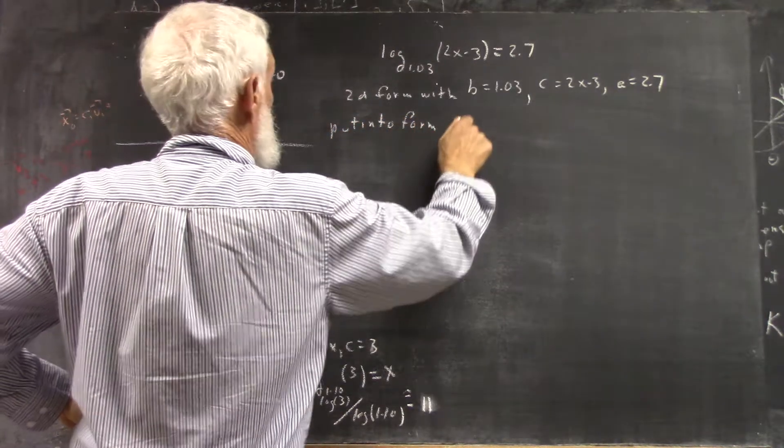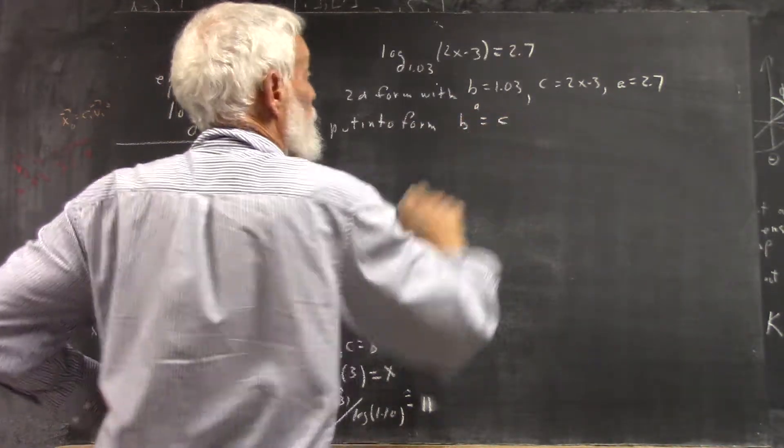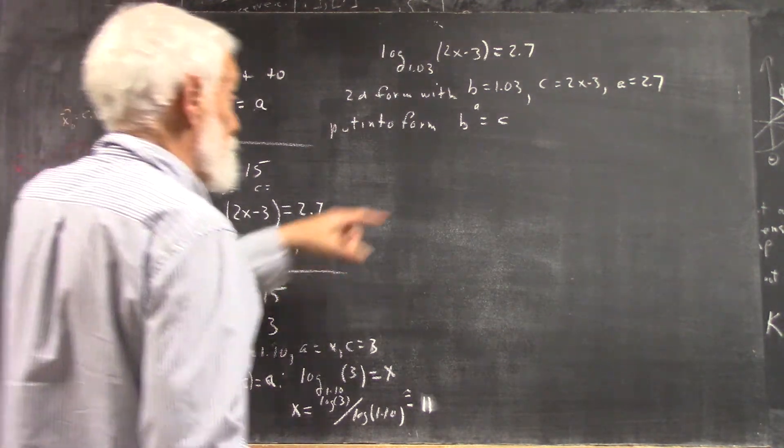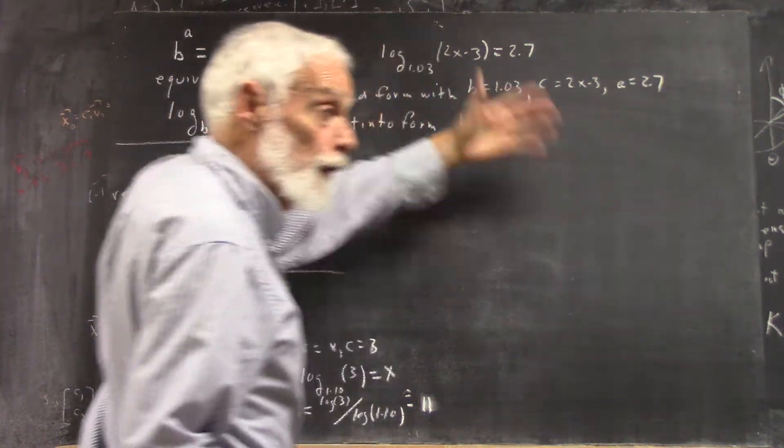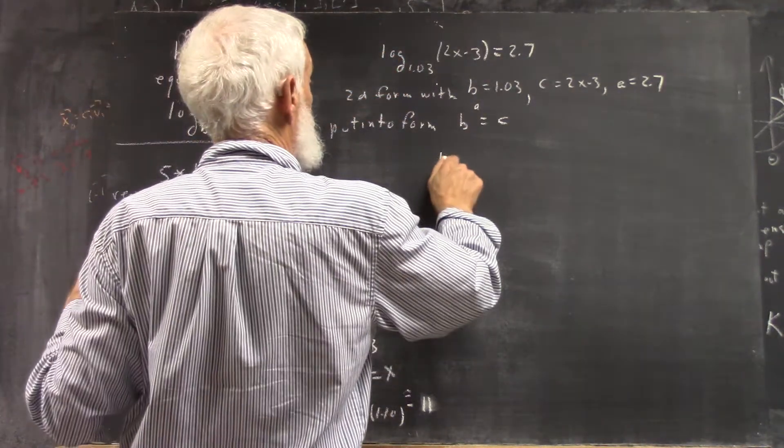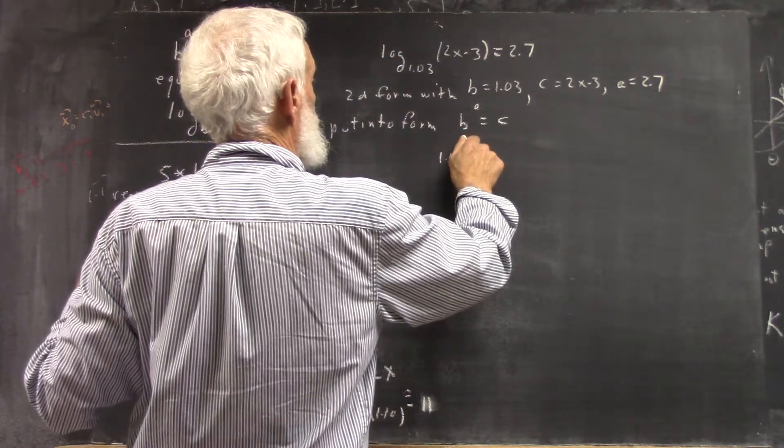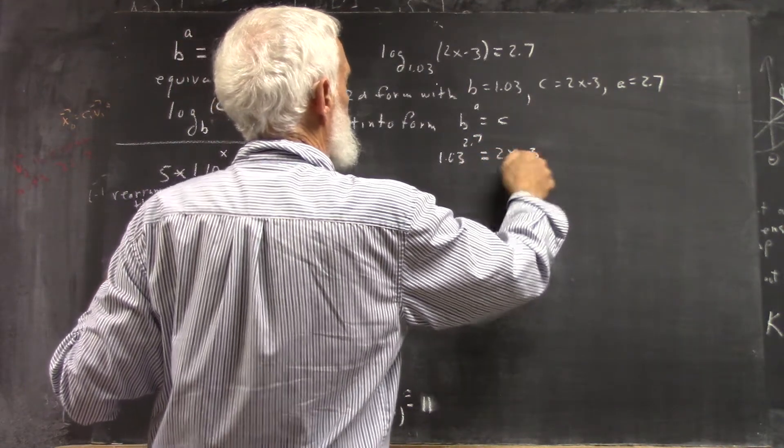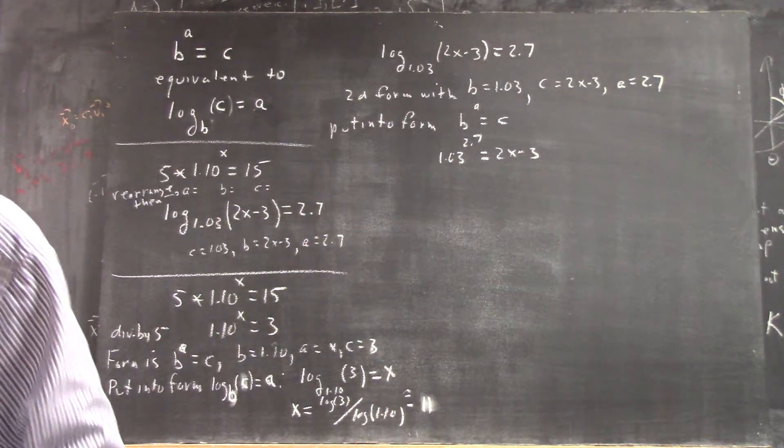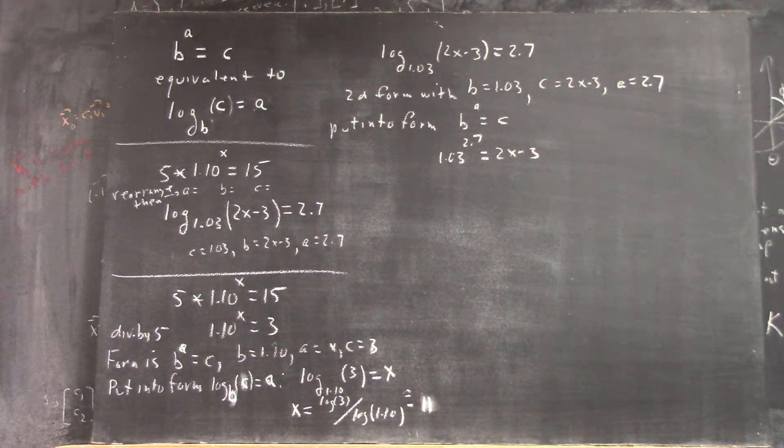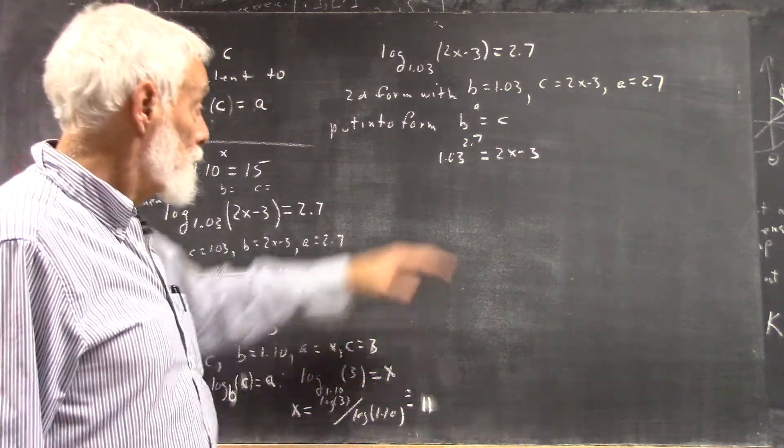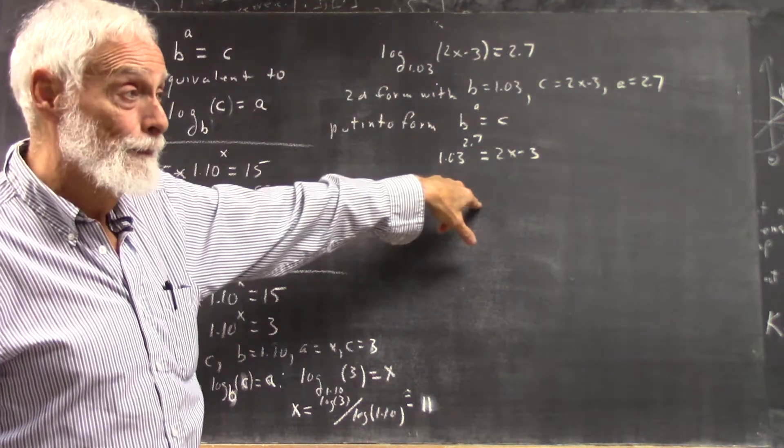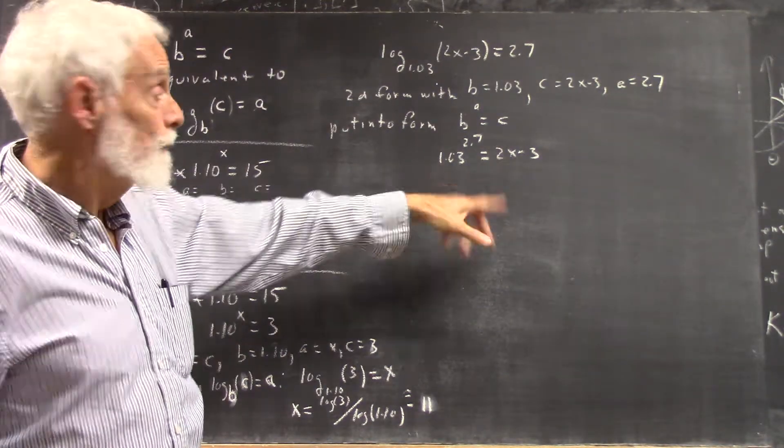And we put that into the form b to the a equals c. Now we know what b, c, and a are, so we write 1.03 to the 2.7 equals 2x minus 3. Now that isn't what many of you got. You got 2x minus 3 to the 2.7 because I wrote this down wrong. But does everybody see that if you put it into the right form, this is what you get?